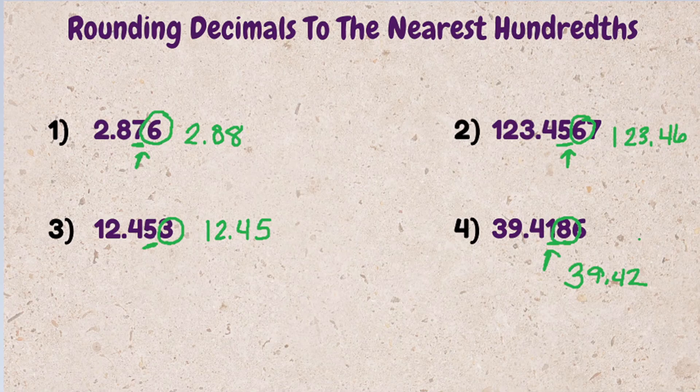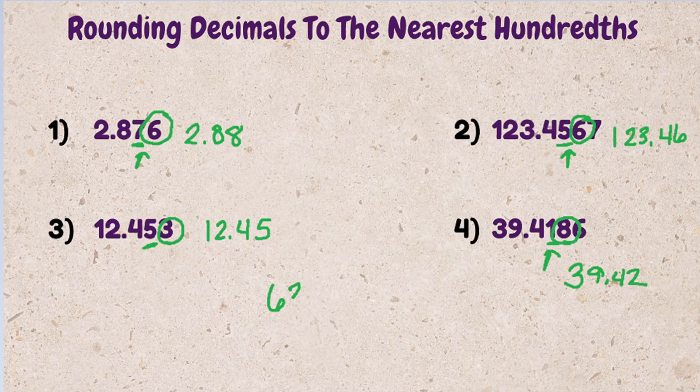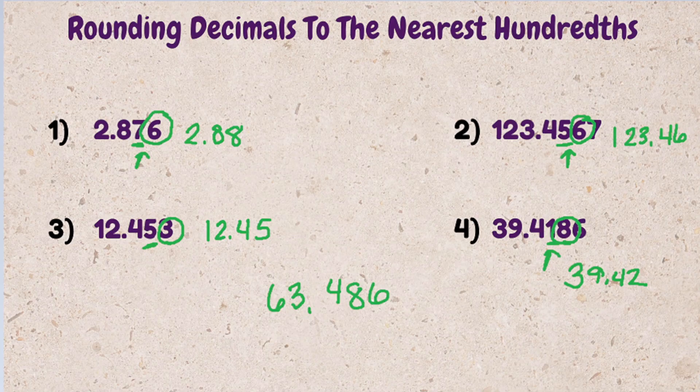Now that you've been through four examples, try one on your own. Let's round 63.486 to the nearest hundredth. Leave your answer in the comments.